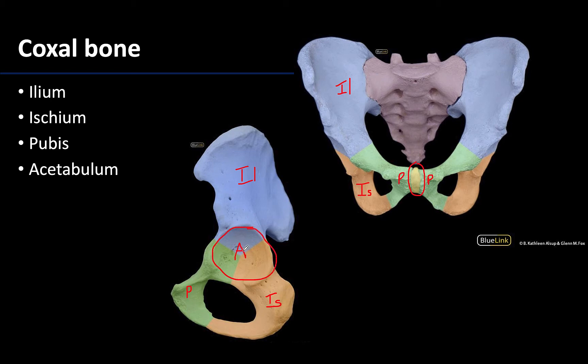The acetabulum faces laterally and will receive the head of the femur to form the hip joint, making it a very important region of this bone.